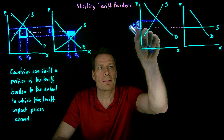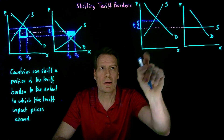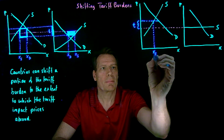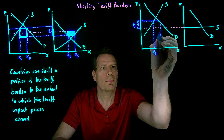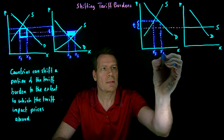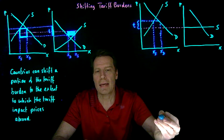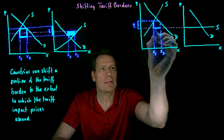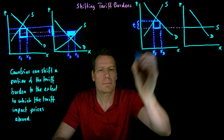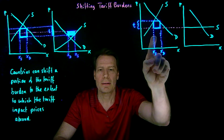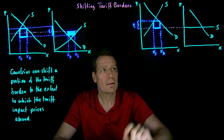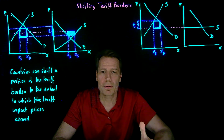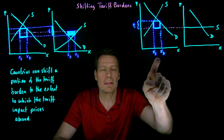So now the entire price change happened within the importing country. This country will have this much supplied by domestic producers, this much bought by domestic consumers, and the tax revenue collected is this per-unit tax times what's being imported — a box paid entirely by the residents of the importing country, because prices haven't changed in the exporting country. In that case, the tariff will decrease the overall surplus in the importing country.